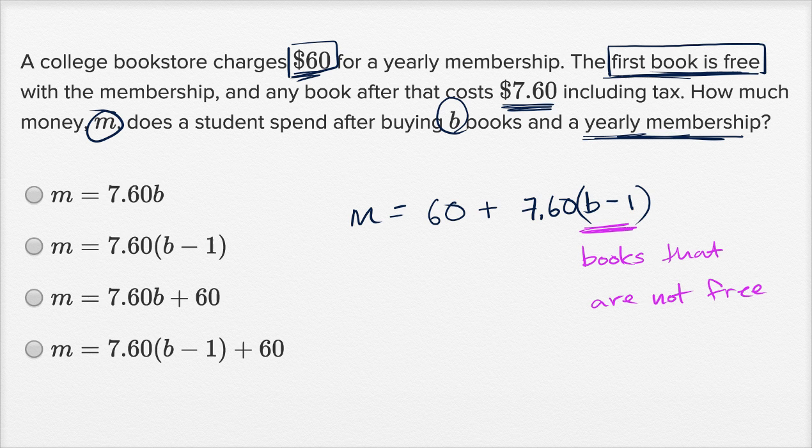All right, now let's see which of these choices actually match what we just wrote. So this one doesn't include the membership and doesn't take one from the B to account for the free book. This one over here does account for the free book but doesn't account for the membership. This one accounts for the membership but doesn't account for the free book. And then we have this one here, which is exactly what we wrote, except they just swapped these two terms: $7.60 times B minus one plus 60. So we're going to go with that one right there.